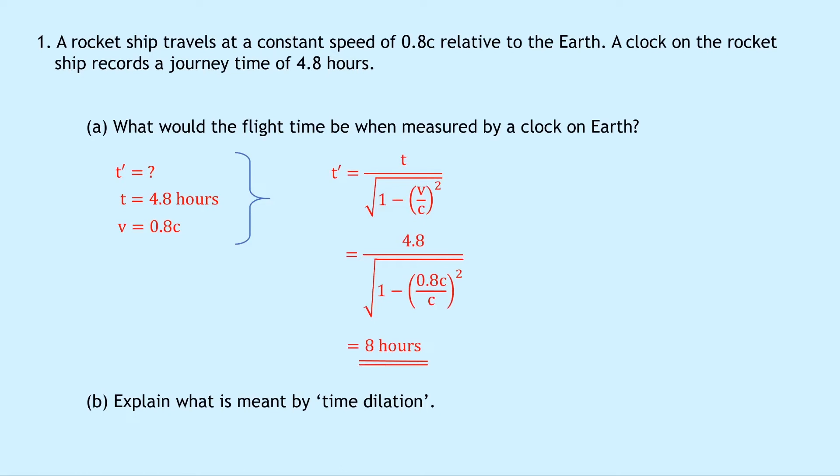Part B says to explain what is meant by time dilation. So this is a definition straight from the notes, but remember: time dilation is the apparent slowing down of a clock that is moving relative to an observer. Another way you could describe that is the apparent increase in time.